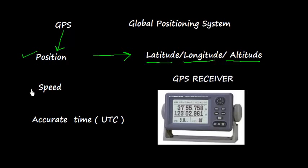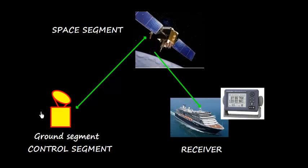Let us discuss the components of GPS. The Global Positioning System contains the space segment which consists of the satellites and the ground segment or control segment which controls the satellite and the receiver.